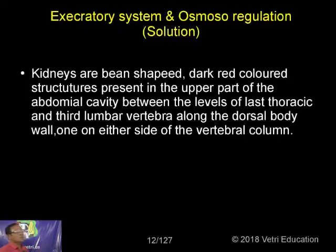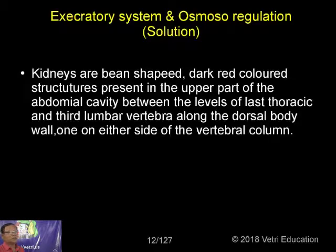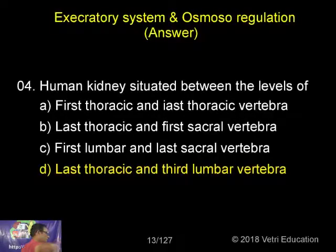Our kidneys are of the metanephric type, meaning they are present towards the posterior end of the body. They are found in the abdominal cavity between the levels of the last thoracic and third lumbar vertebra, attached to the dorsal body wall. That is why it is called the metanephric type — last thoracic to third lumbar vertebra.